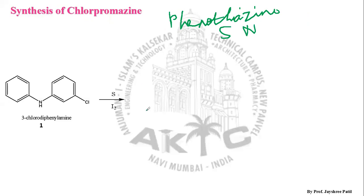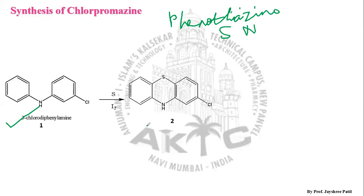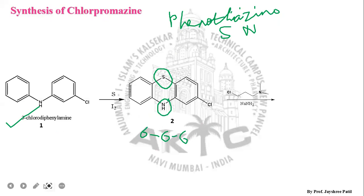The central ring should consist of sulfur and nitrogen as heteroatoms. The starting material is 3-chlorodiphenylamine, which is reacted with sulfur in the presence of iodine to form the 6-6-6 pattern. This gives us the main required pharmacophore as structure 2. Since this is a representative example of phenothiazine, sulfur is introduced here and the nitrogen comes from the original reactant.